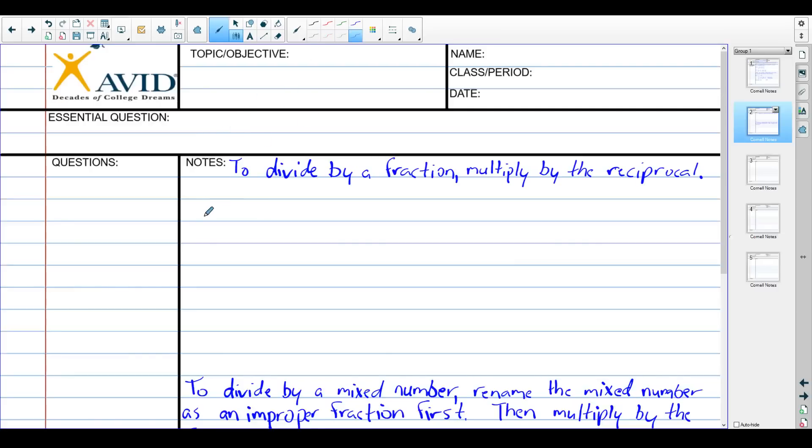Example four: one third divided by negative four fifths. We say multiply by the reciprocal. The reciprocal, we always take the second number. So four fifths, we flip that over and that becomes five over four. You can keep the negative with the four. I like to keep it on top.